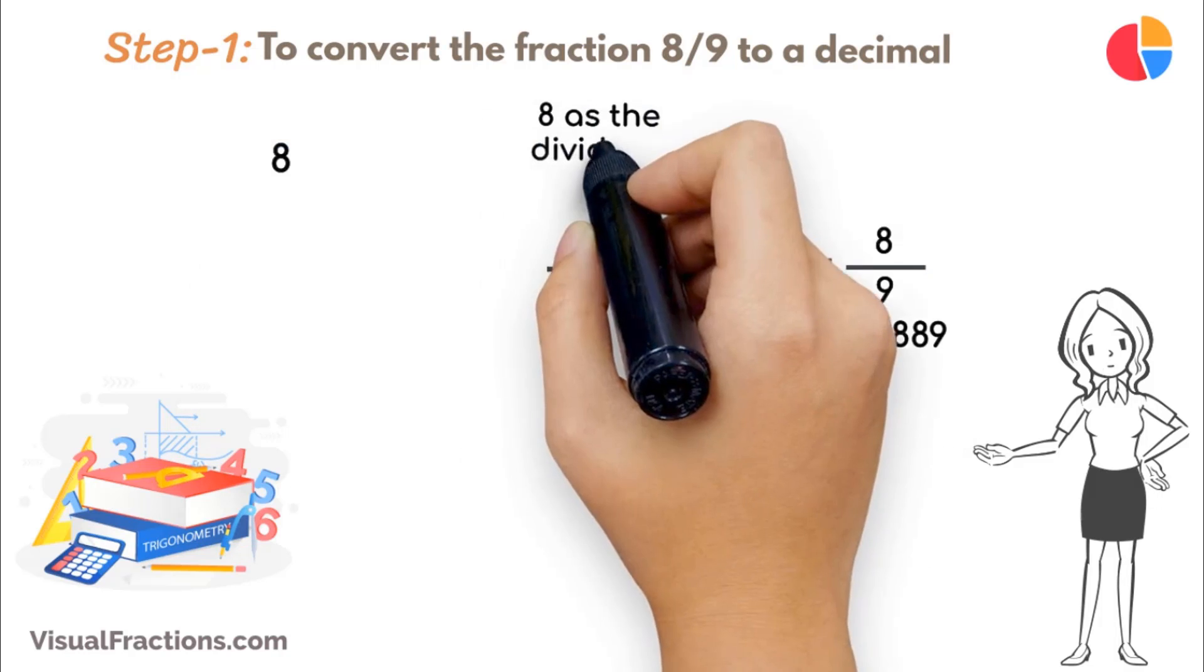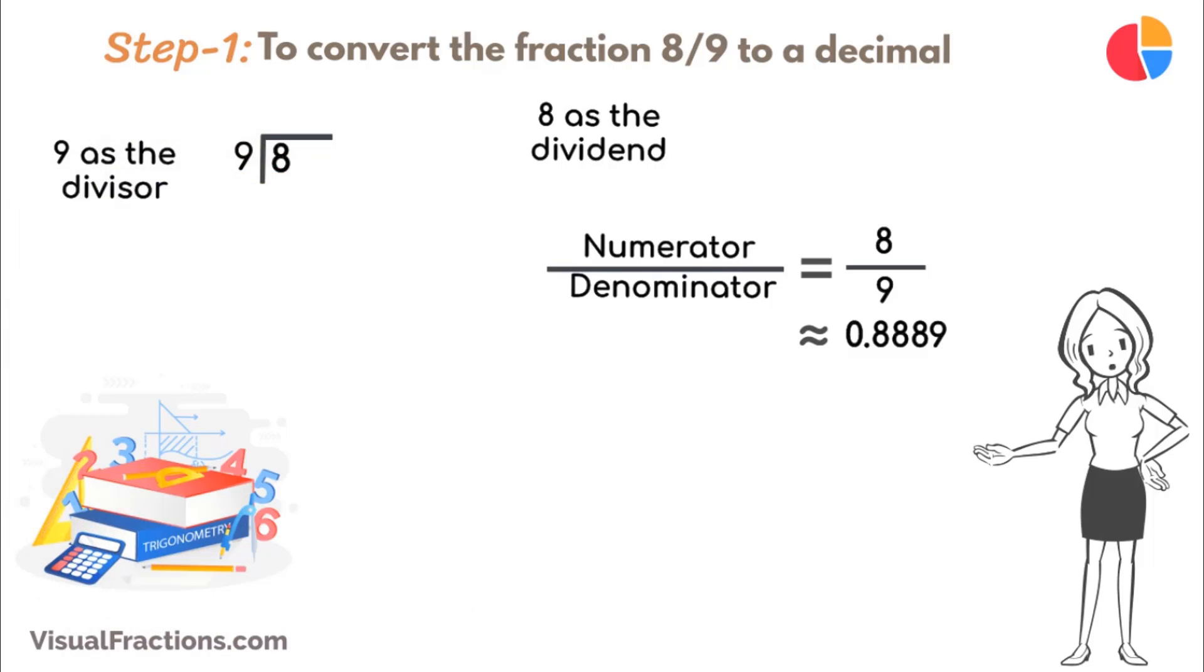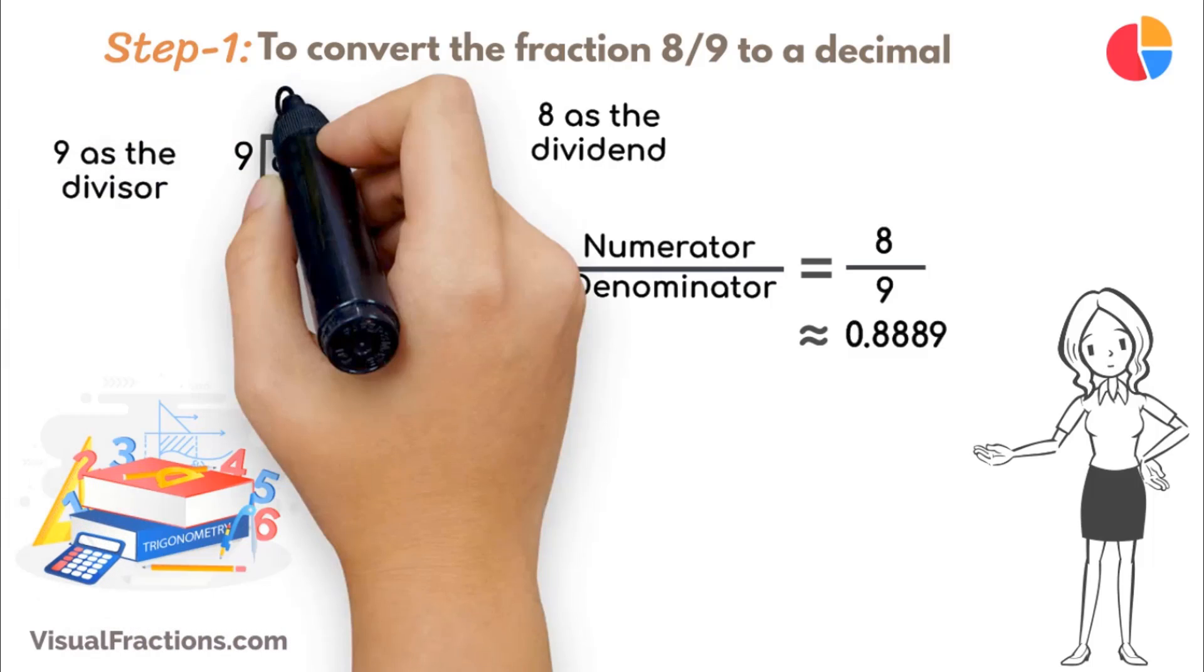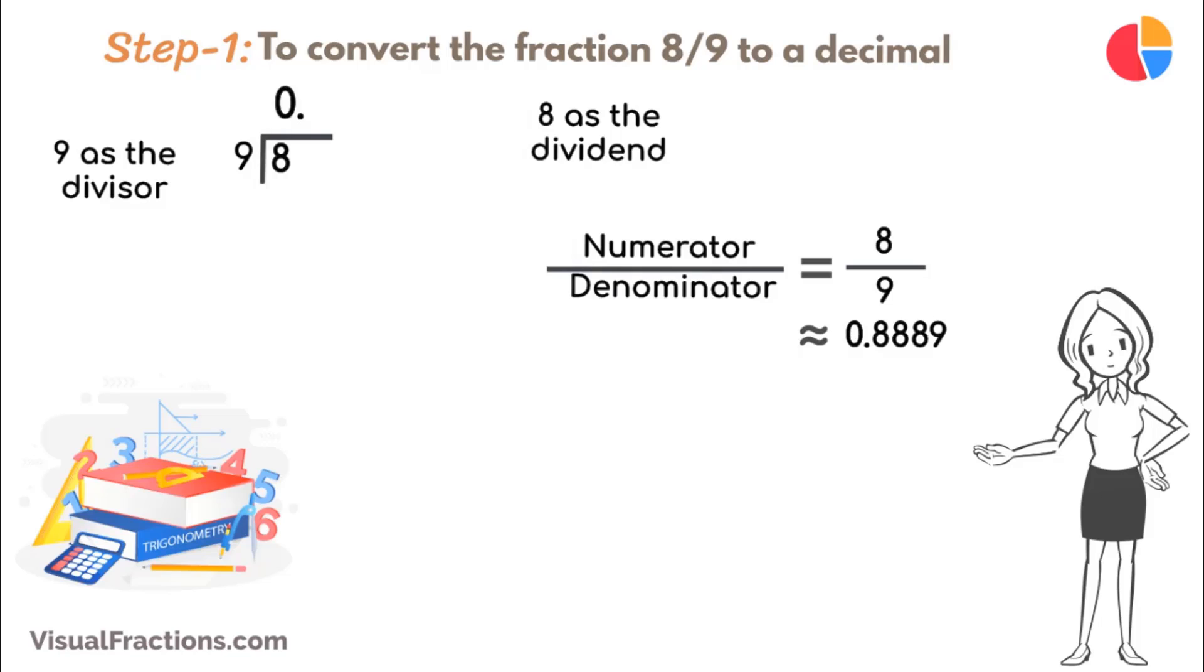Place 8 as the dividend and 9 as the divisor. Since 9 doesn't fit into 8, place a decimal point in our quotient and bring down a 0, making it 80. 9 goes into 8 8 times, putting 0.8 in our quotient. Multiply 9 by 8 to get 72, and subtract this from 80, leaving a remainder of 8.